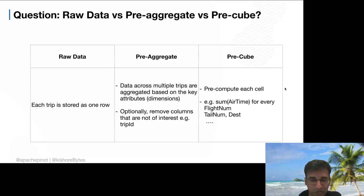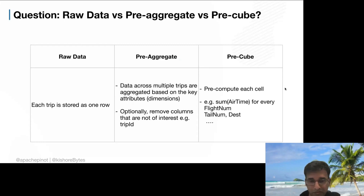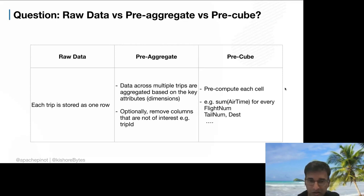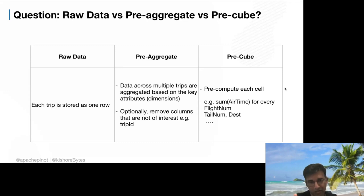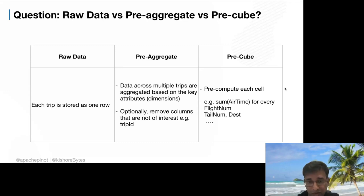A classic approach is to store every flight record as one row and do aggregation at query time — simple and good enough when data is small. A second solution is pre-aggregation: remove less-interesting fields like trip ID and aggregate flights between common destinations, collapsing the data for better performance. Then there's the other extreme — cubing — which pre-computes every possible answer, like how many flights traveled from Atlanta, or from Atlanta to San Francisco.